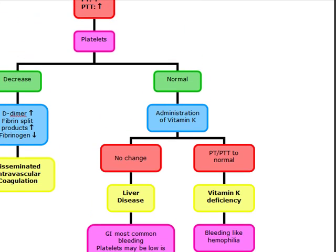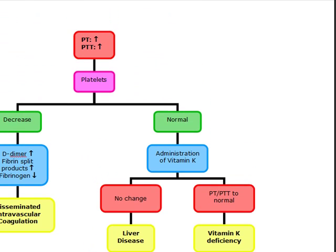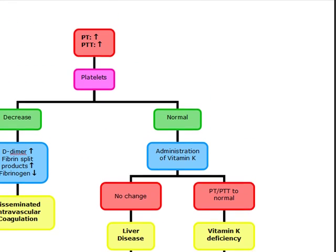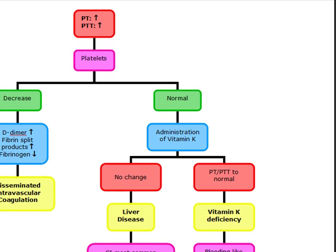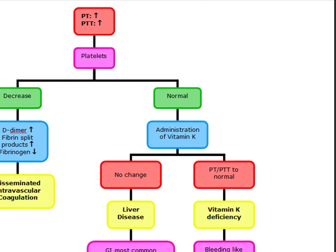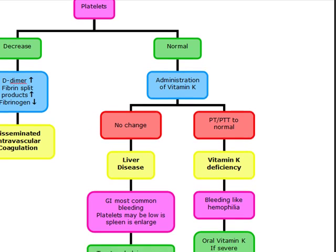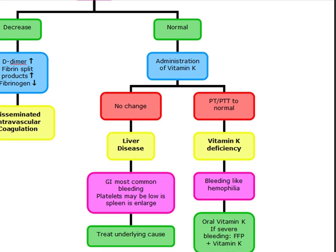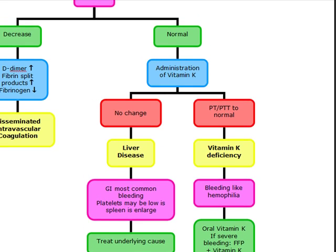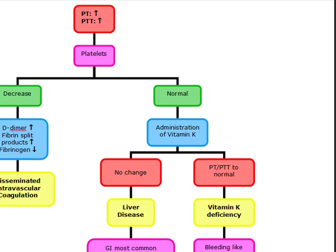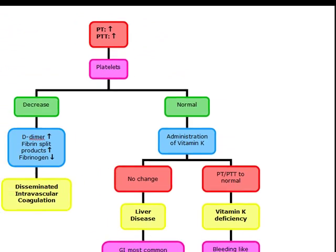So this has been coagulopathies part 2 — DIC, liver disease, and vitamin K deficiency — and how to distinguish amongst them.